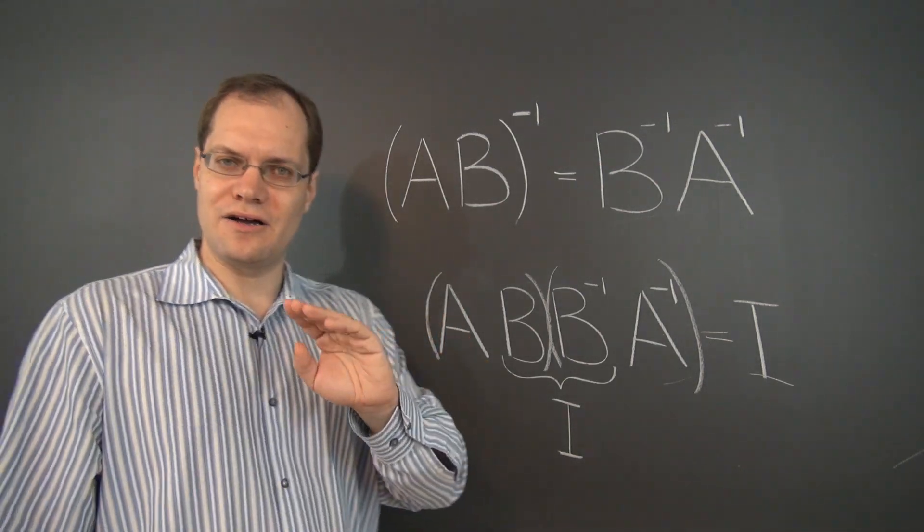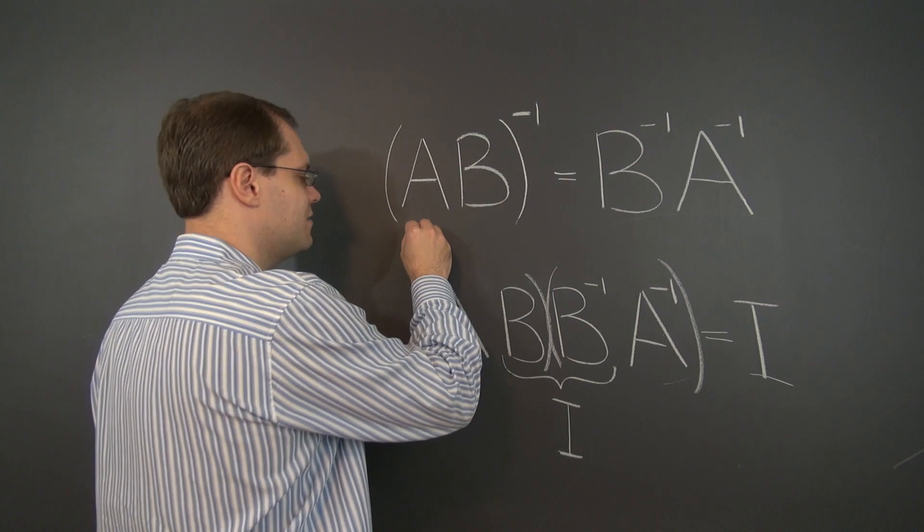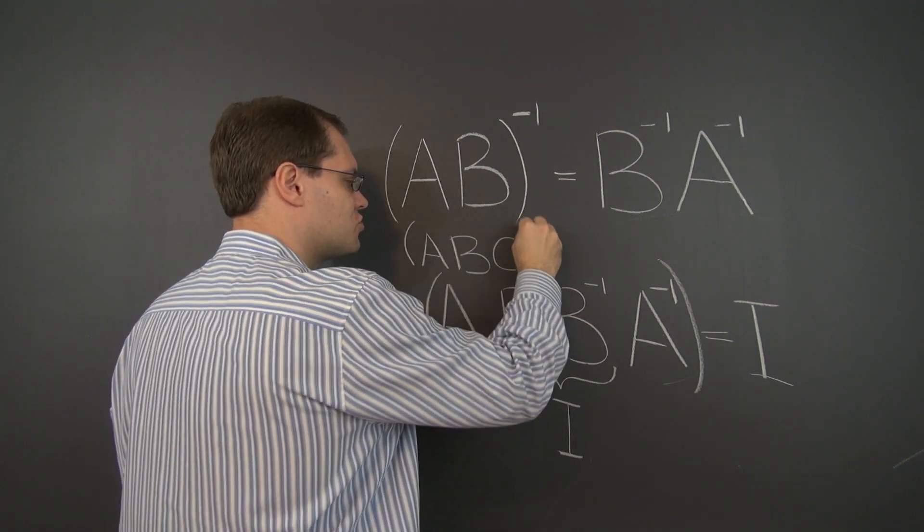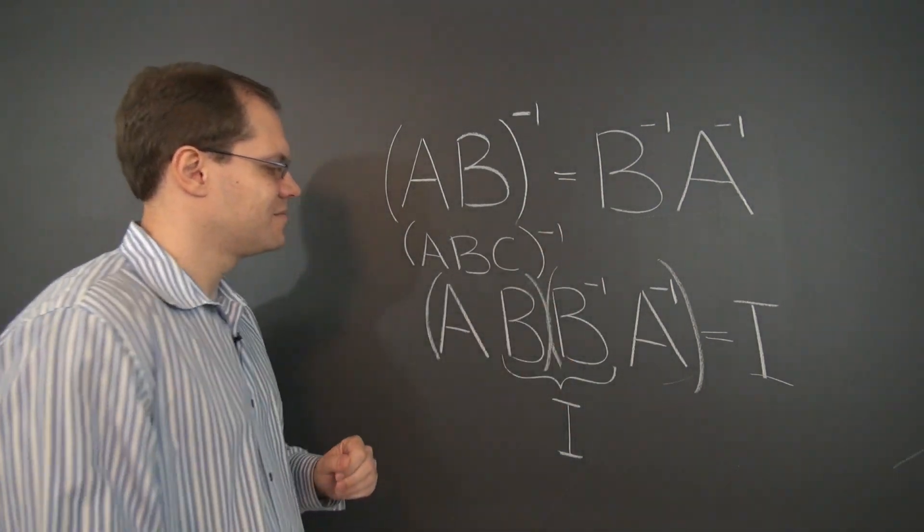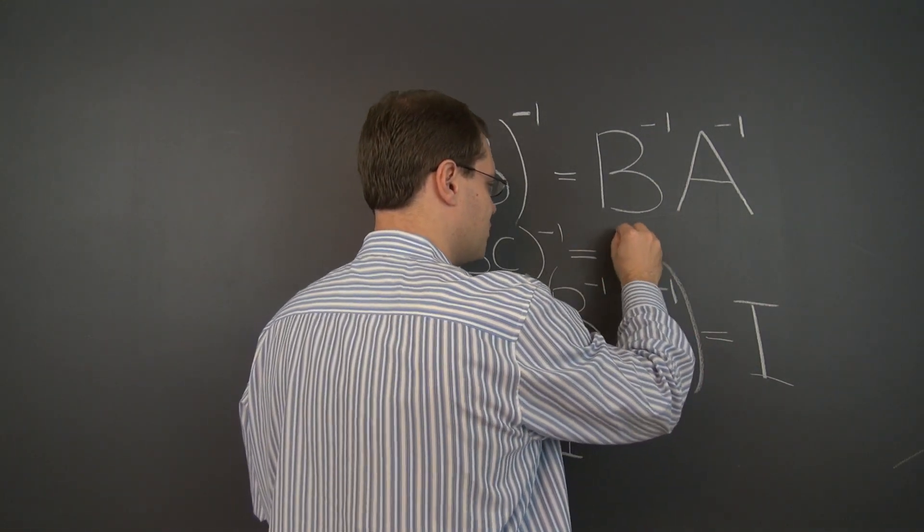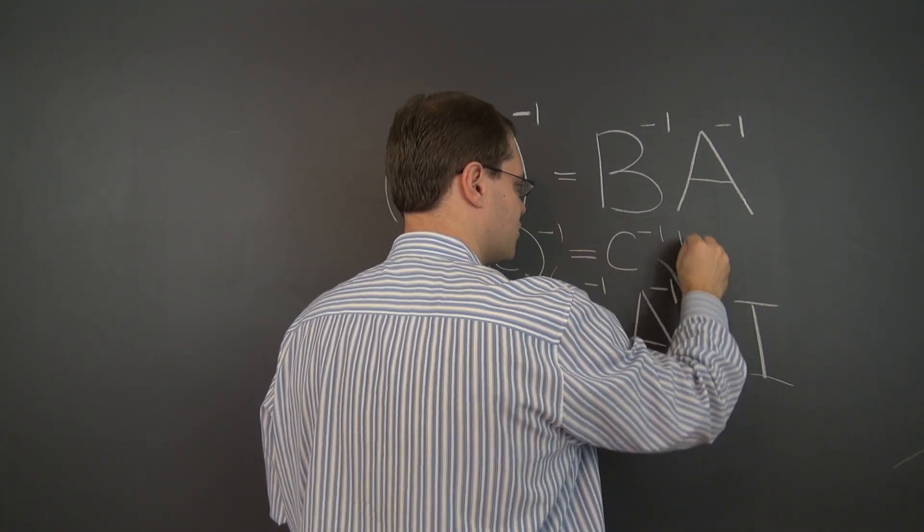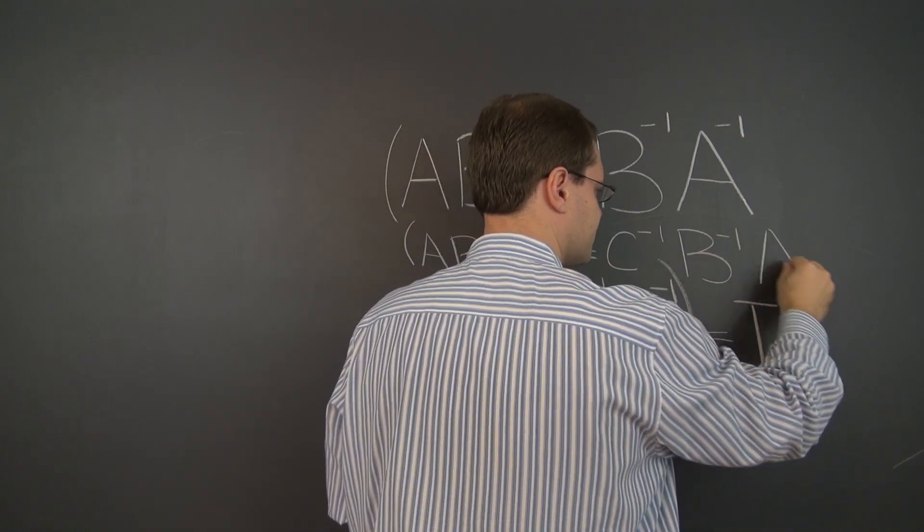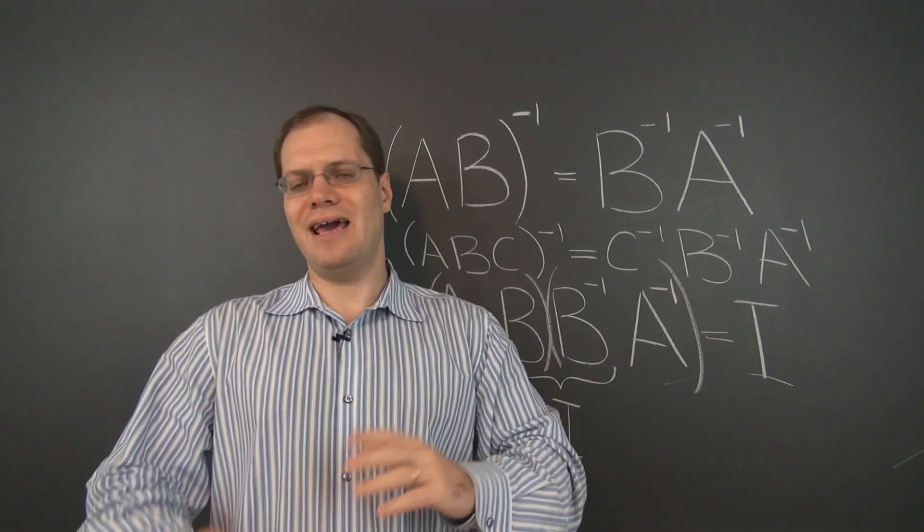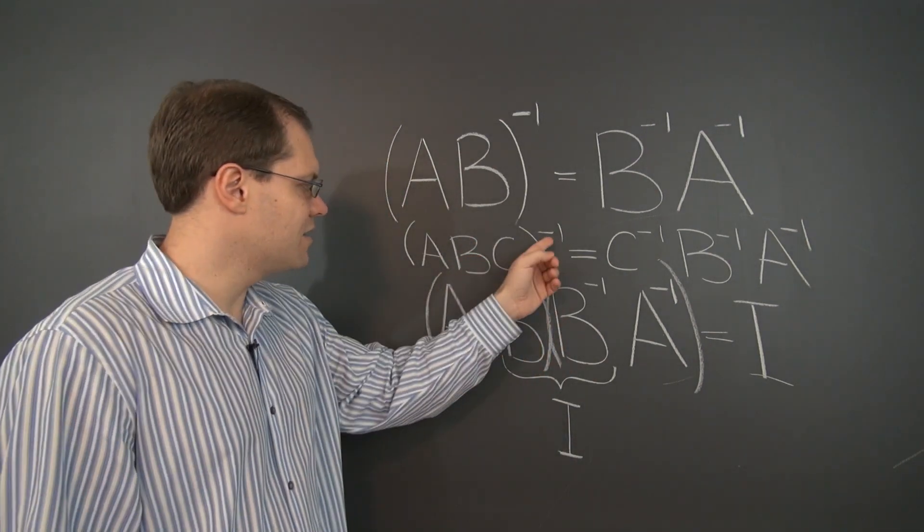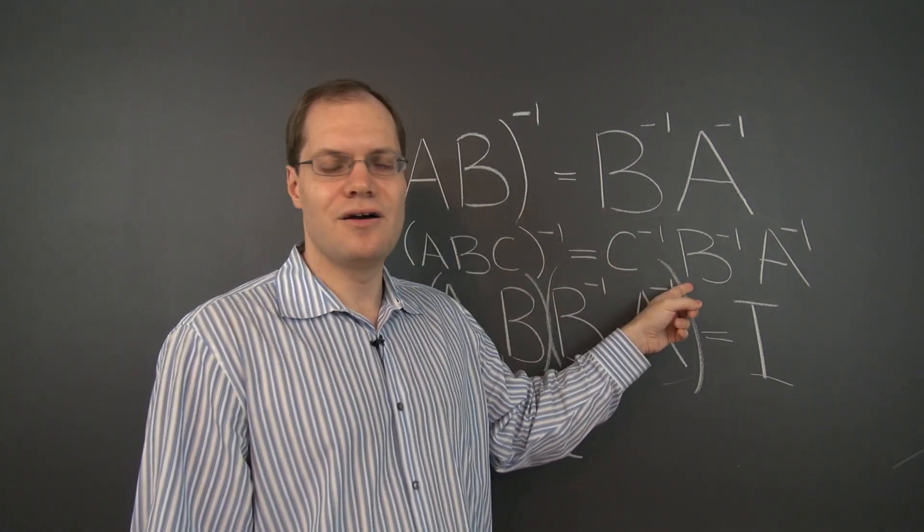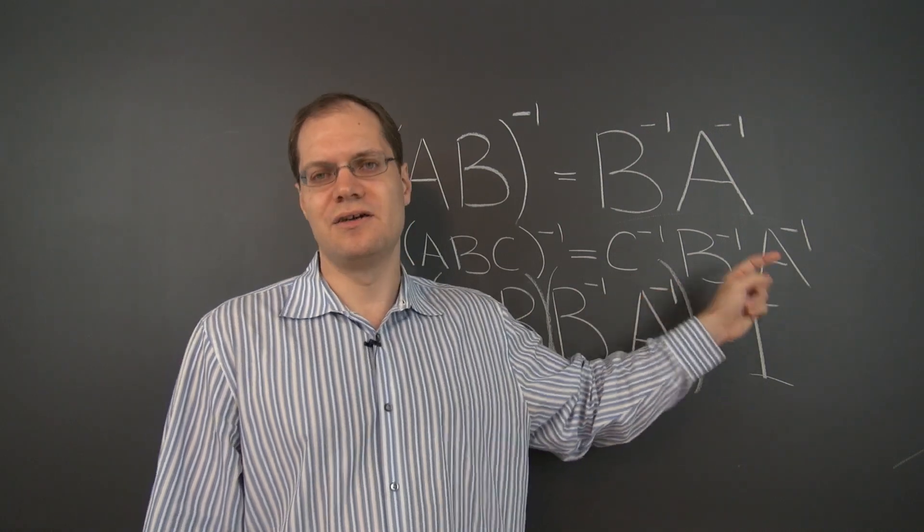Now, a question which will be very simple to answer. I'll even sneak it in here. What is the inverse of a triple product? And of course, by the same reasoning, it will be the three inverses in reverse order. And of course, this works for four matrices, five matrices, any number of matrices. The inverse of a product of any number of matrices is the product of the inverses in the opposite order.